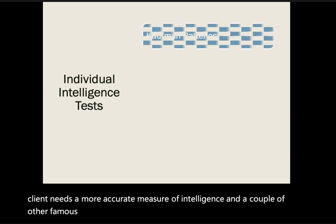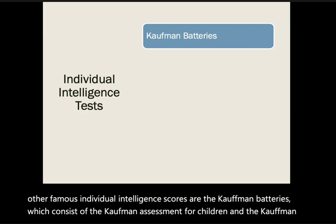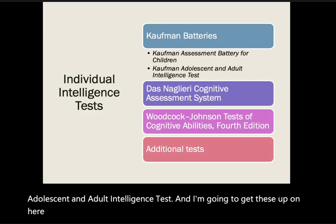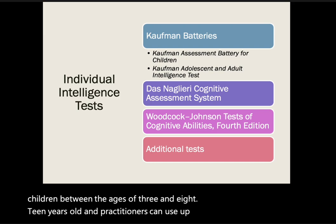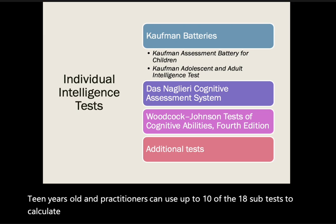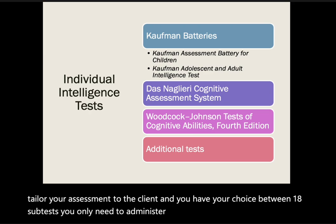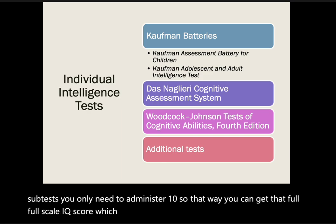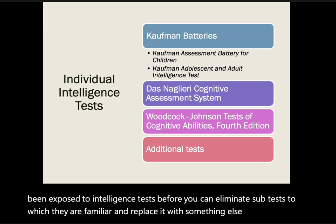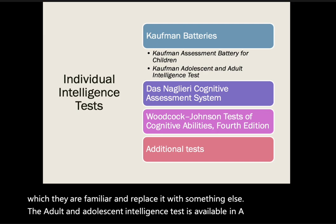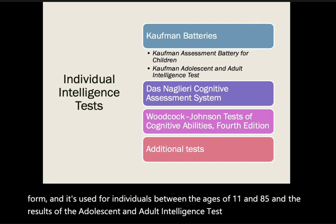A couple of other notable individual intelligence tests are the Kaufman batteries, which consist of the Kaufman Assessment Battery for Children (KABC) and the Kaufman Adolescent and Adult Intelligence Test (KAIT). The KABC is in its second edition and can be used with children between ages 3 and 18. Practitioners can use up to 10 of 18 subtests to calculate six different ability indices, allowing clinicians to tailor the assessment and substitute subtests for clients previously exposed to certain items. The KAIT is available in a shortened form for individuals ages 11 to 85, providing scores for fluid intelligence, crystallized intelligence, and a general composite score.